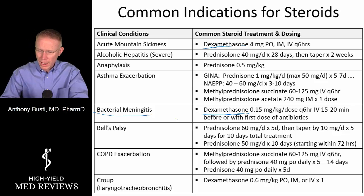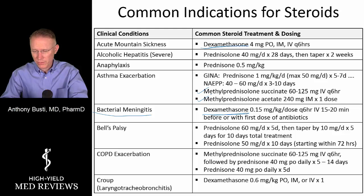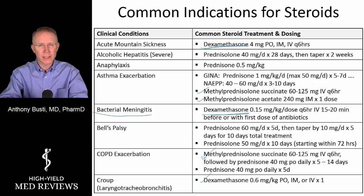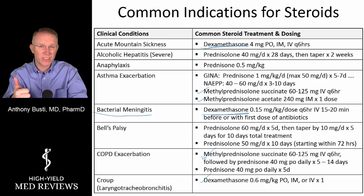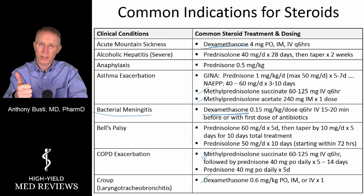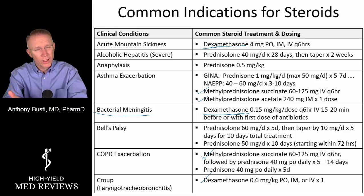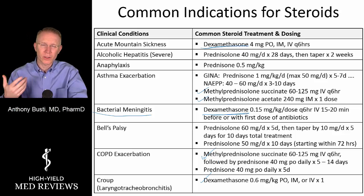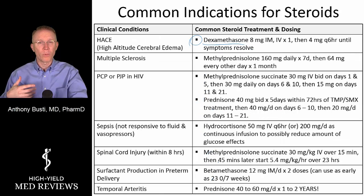In conditions like asthma, you see methylprednisolone — again with lower amounts of mineralocorticoid activity — and the same applies to COPD. What about croup? That's subglottic edema, and we give a single dose to those pediatric patients. Why a single dose? One, because of the long half-life and long duration, and two, it involves swelling in a small airway, and we don't want to facilitate more swelling.